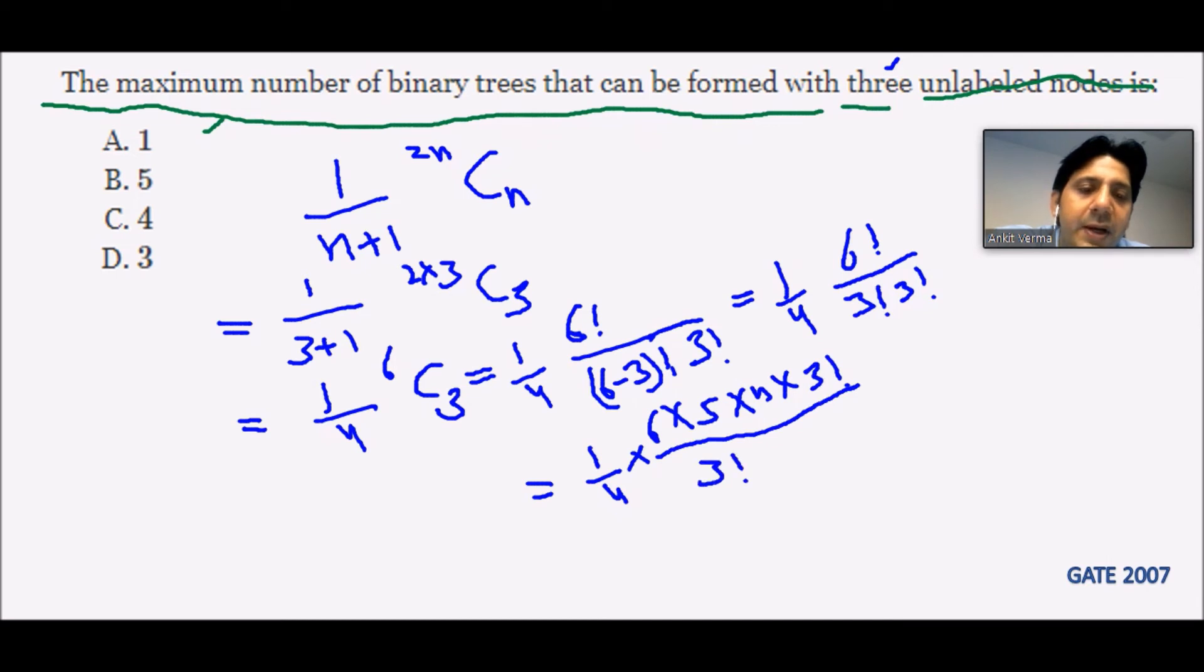Now we are going to strike off 4 with 4, then 3 factorial with 3 factorial, then 3*2 with 6.